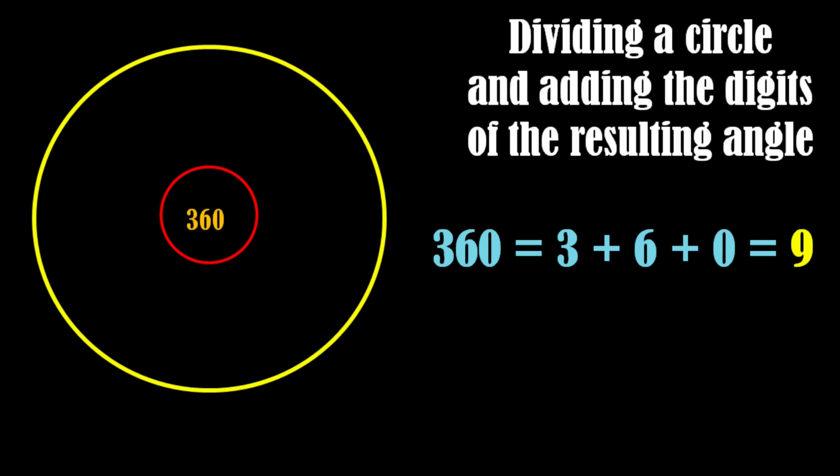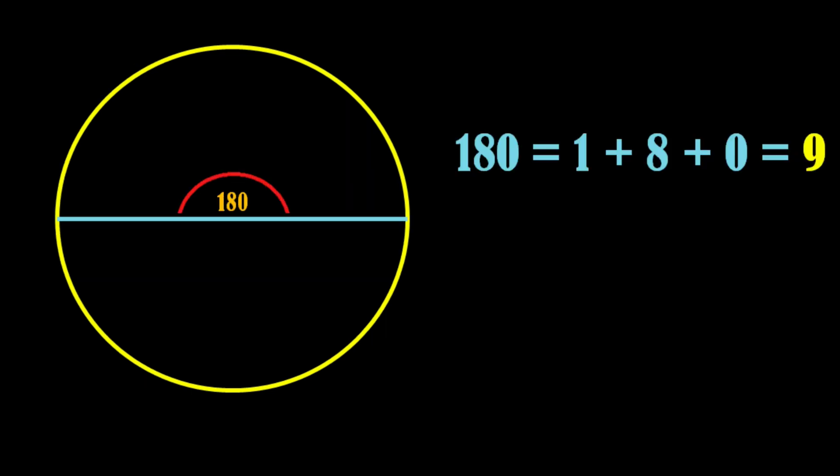But what will happen if we continue dividing the circle in half indefinitely? The results will blow your mind. A semi-circle forms an angle of 180 degrees at its center, which also sums up to 9.